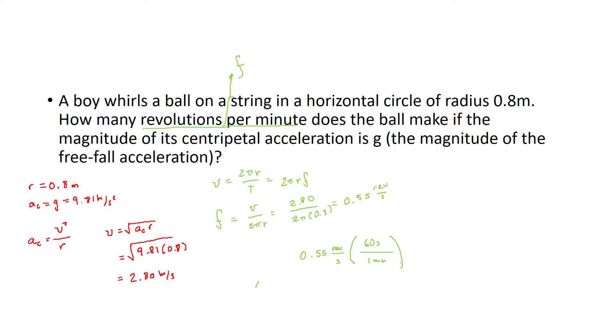We just multiply it times 60 and we get 33.43 revolutions per minute. And this is our result.